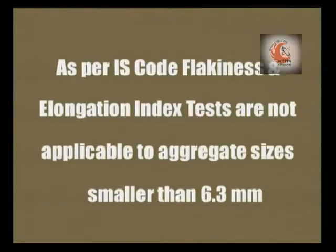As per the Bureau of Indian Standards code, flakiness and elongation tests are not applicable to aggregate sizes smaller than 6.3 mm. In this video program, you have seen the apparatus and the procedure to determine the flakiness and elongation index value of coarse aggregate, and the steps involved in calculating these index values. It is important to know that the upper limit of flakiness and elongation index value as per British Standards is 35 to 40%, depending upon the size of the aggregate. I hope after having viewed this video, you will be able to perform this experiment in your laboratory. Thank you.